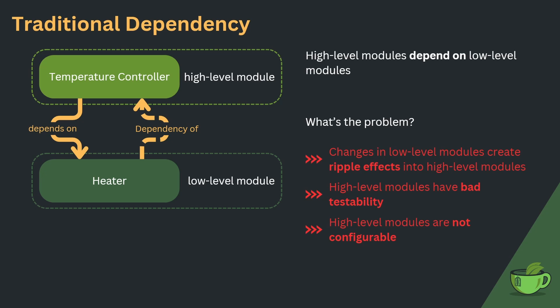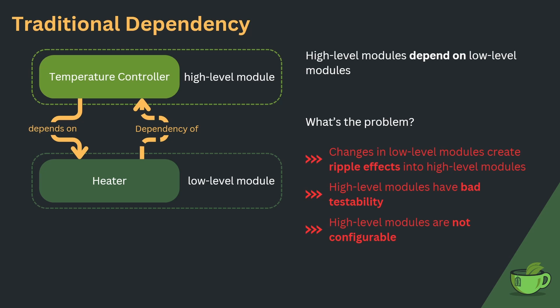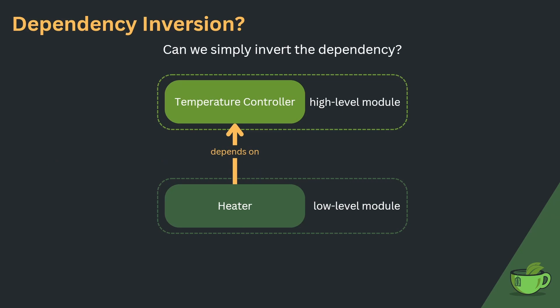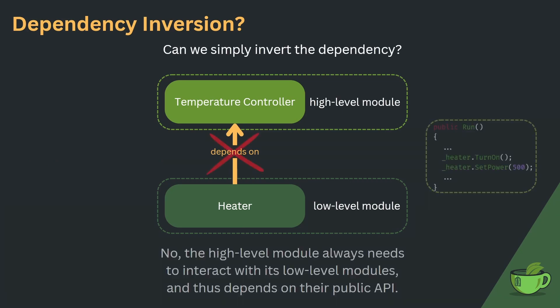So now that we see the traditional dependency structure leaves us with all those problems, we should ask: can we simply invert the dependency? Can we just call it dependency inversion and be done? Well, not directly. We earlier stated that dependency means using another class's public API, and the temperature controller uses the heater API, not the other way around. The high-level module always needs to interact with its low-level modules and thus depends on their public API.